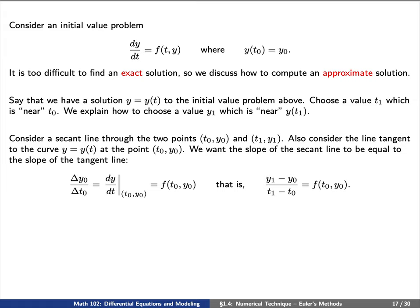Let's consider a secant line through the two points t0, y0 and t1, y1. We'll also consider the line tangent to the curve at this point t0, y0. Intuitively, we want the slope of the secant line to be equal to the slope of the tangent line.